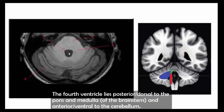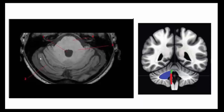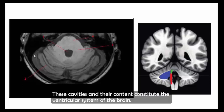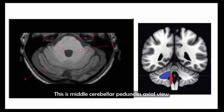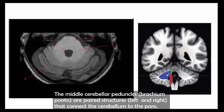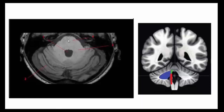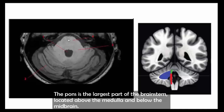This is the cerebellar hemisphere — the two divisions of the cerebellum on either side of the vermis. This is the middle cerebellar peduncle on axial view and coronal view. The middle cerebellar peduncles are paired structures that connect the cerebellum to the pons.